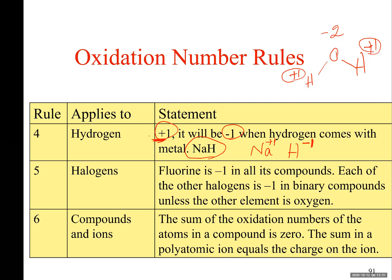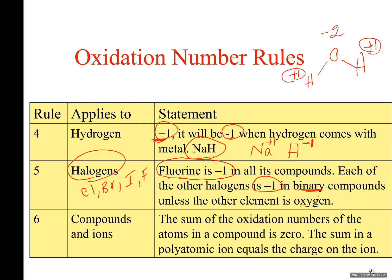When we talk about halogens — chlorine, bromine, iodine, fluorine — fluorine is at the top of the group and its charge is always minus one. The rest of the halogens are also minus one in a binary compound, which is a compound composed of two different atoms, unless the other element is oxygen.